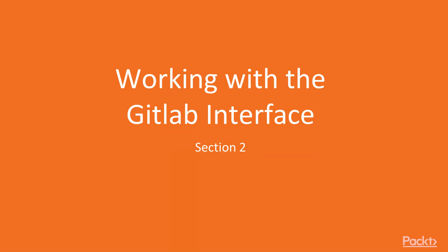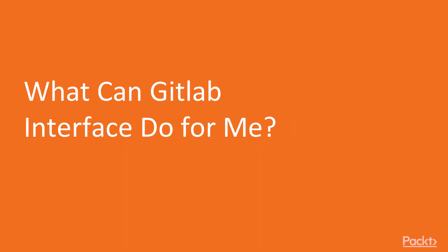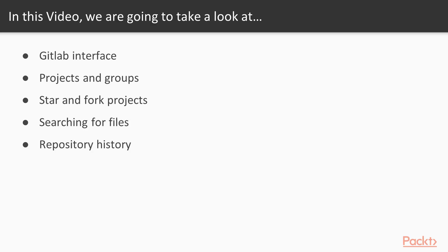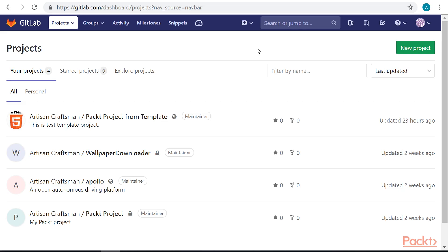Welcome to Section 2: Working with the GitLab interface. What can the GitLab interface do for me? In this video, we'll take a look at the GitLab interface, projects and groups, how to star and fork a project, searching for files, and looking through the repository history. Let's take a look at how GitLab is structured by moving around the interface.